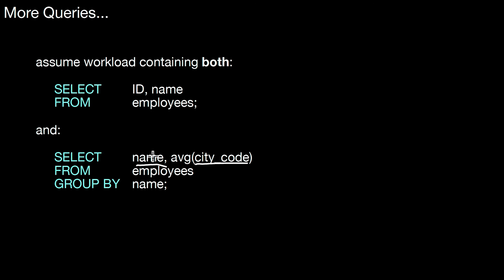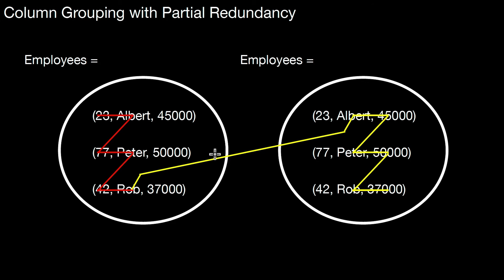So how do we do that? The major difference to the column grouping scenario we just had above is that name occurs in both queries. So id just occurs here, city code just occurs here but name occurs in both queries. So here again we could use redundancy. We could revisit this attribute but we don't have to revisit this attribute and we don't have to revisit this attribute. So how does that look like? It looks like this.